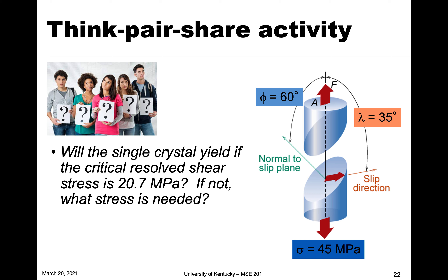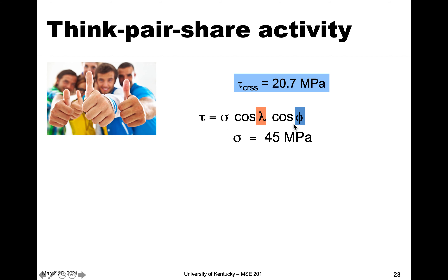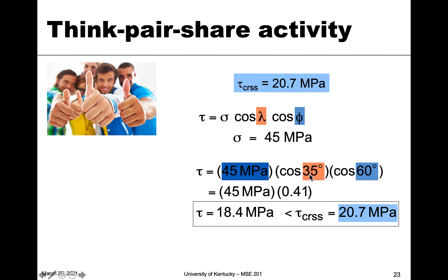Now that you're back and you've had a chance to look at this question, let's go through and see if we can solve this. Our critical resolved shear stress, tau CRSS, is equal to 20.7 megapascals. We know from Schmid's law that the resolved shear stress equals the tensile stress multiplied by the cosine of those two angles — the tensile stress was given as 45 megapascals — so cosine of 35 times cosine of 60.